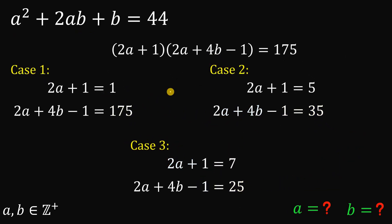Now at this point, let's solve for the values of a and b in these three cases. So for case number 1, 2a plus 1 equals 1. Subtract 1 on both sides, divided by 2. We get that a equals 0. Now since a is 0, 2a is also 0. 4b minus 1 equals 175. Add 1 on both sides. We have 176 divided by 4. b equals 44.